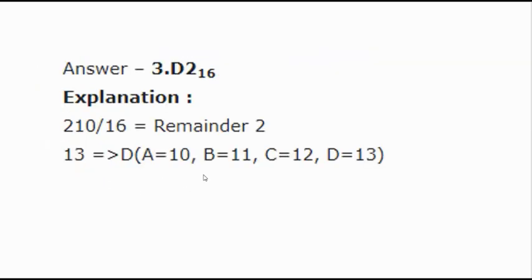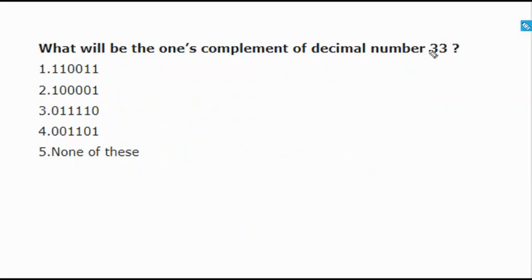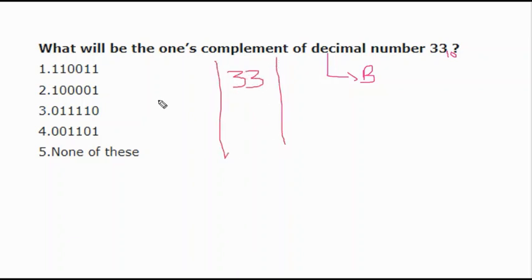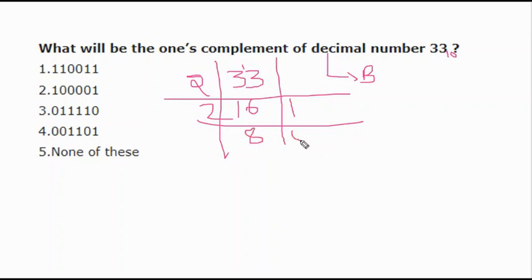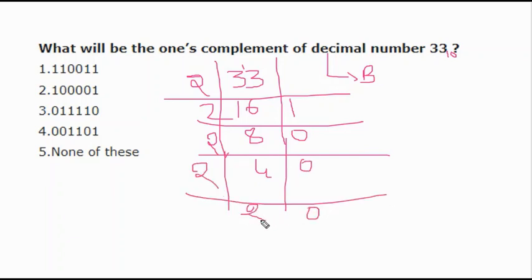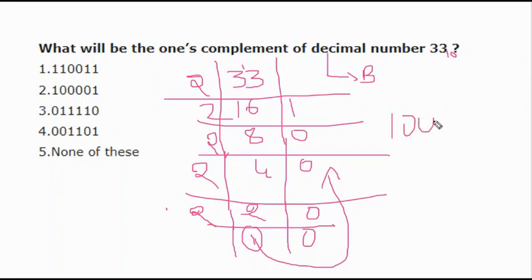Next question: what will be the one's complement of decimal number 33? Decimal 33 means base 10 — not 0.33. To find the one's complement, first convert the decimal to binary using the ladder method. 33 ÷ 2: keep dividing — 33, 16 remainder 1, 8 remainder 0, 4 remainder 0, 2 remainder 0, 1 remainder 0. Reading upward: 1 0 0 0 0 1.